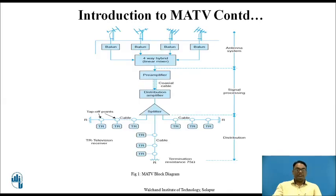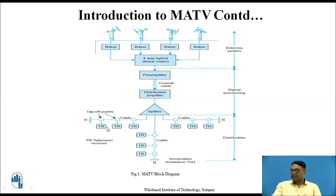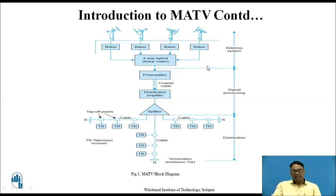This is the block diagram for MATV. As you can see, there are different antennas connected. Then there is a balun by which the antennas are connected, and then there is a hybrid system which is a linear mixer. Then there is a pre-amplifier, distribution amplifier, and splitter. Then there are different television receivers TR1, TR2, TR3, TR4, TR5, and TR6. The section from the television receivers to the splitter is known as the distribution system. From the splitter to the pre-amplifier, it is known as the signal processing system. From the pre-amplifier upward towards the antennas, it is known as the antenna system.